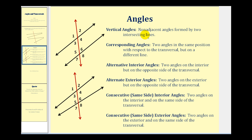So again, in geometry, most of the time a transversal cuts two parallel lines as you see here in this diagram. However, the two lines don't have to be parallel for the red line to be a transversal. So let's go ahead and go through all these different types of angles formed when a transversal intersects two or more lines.